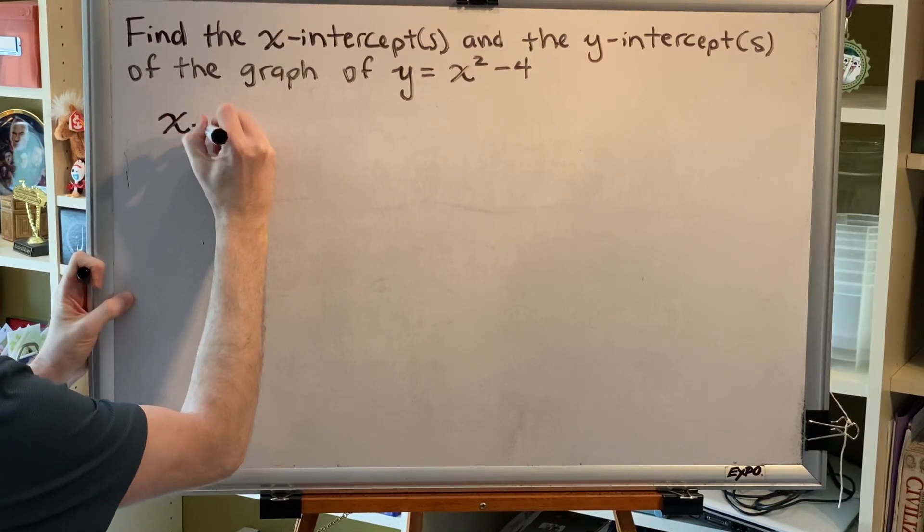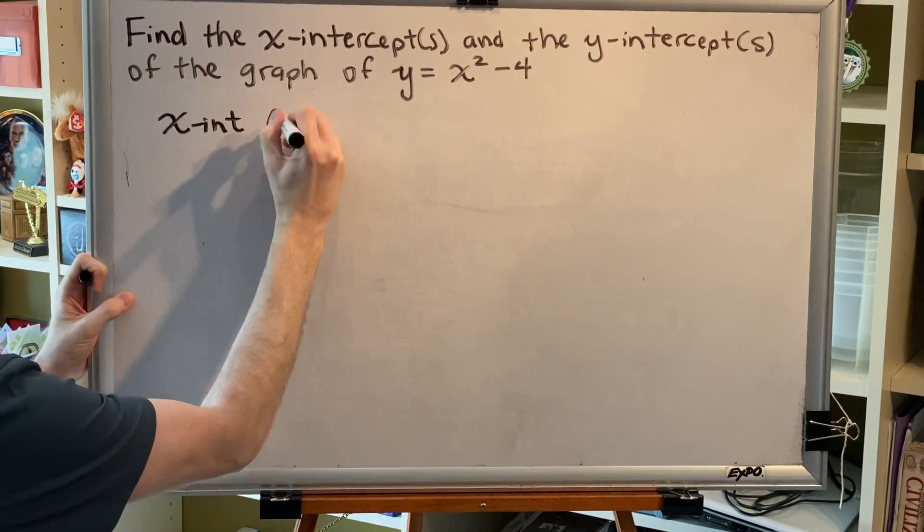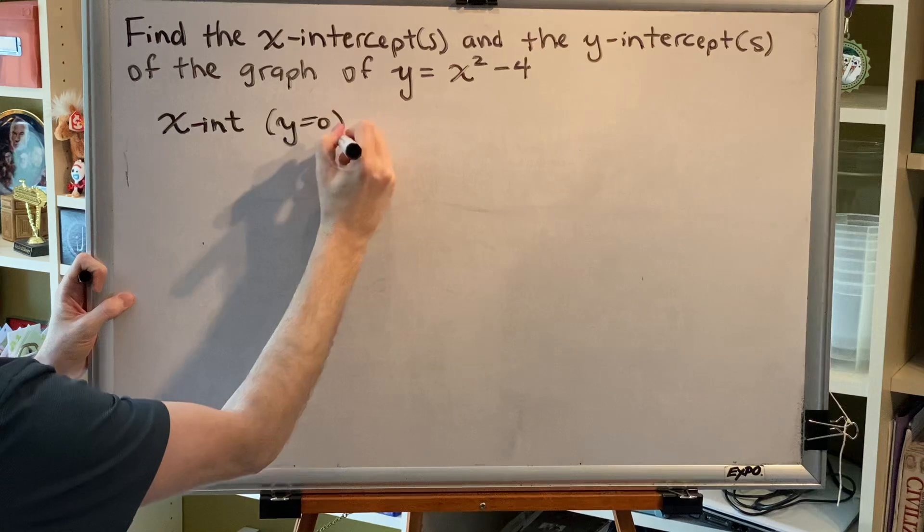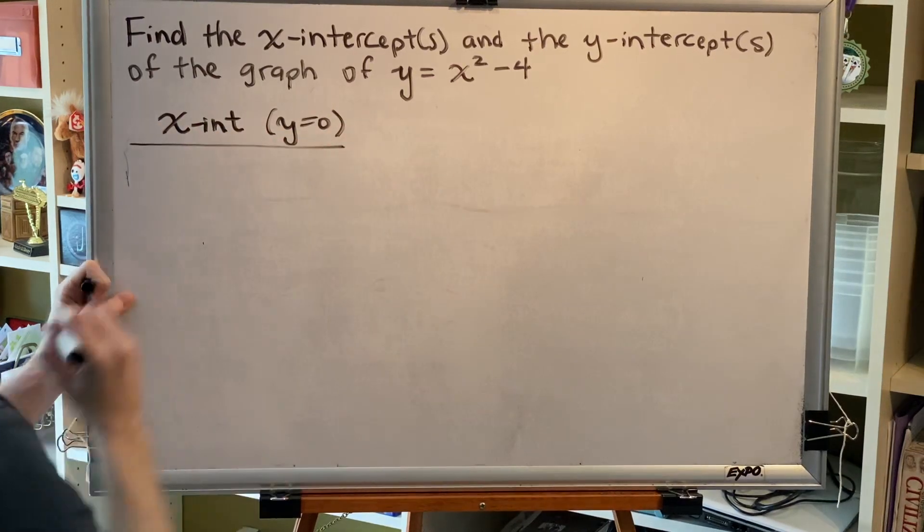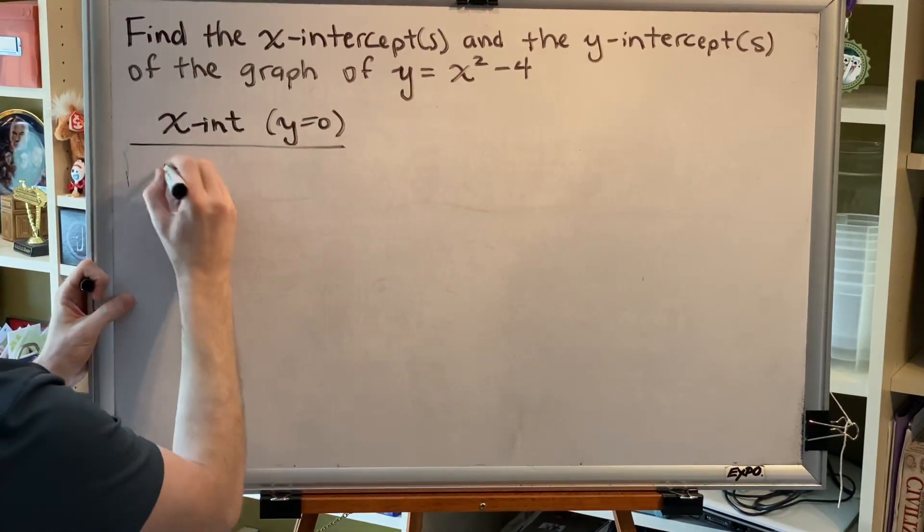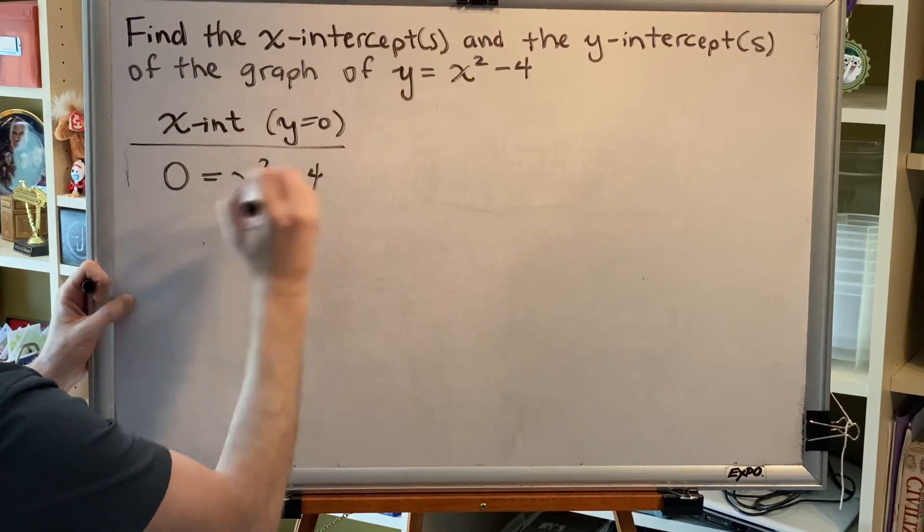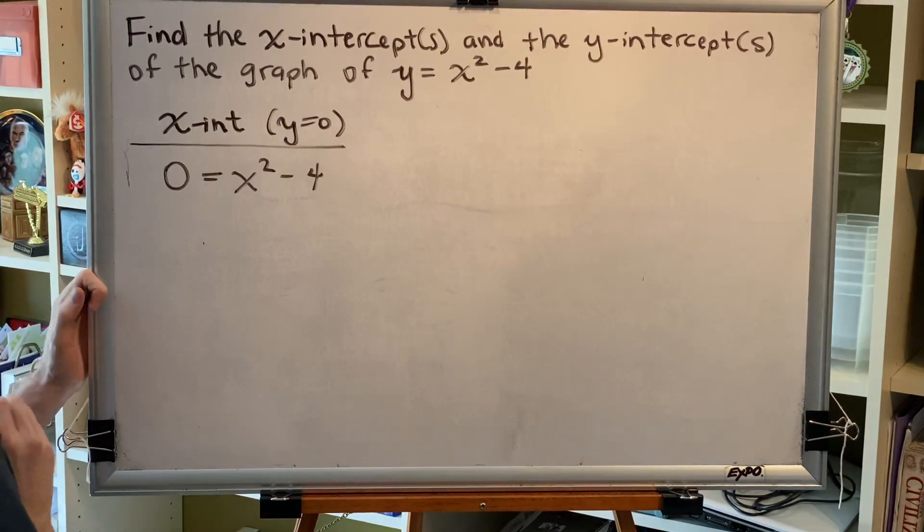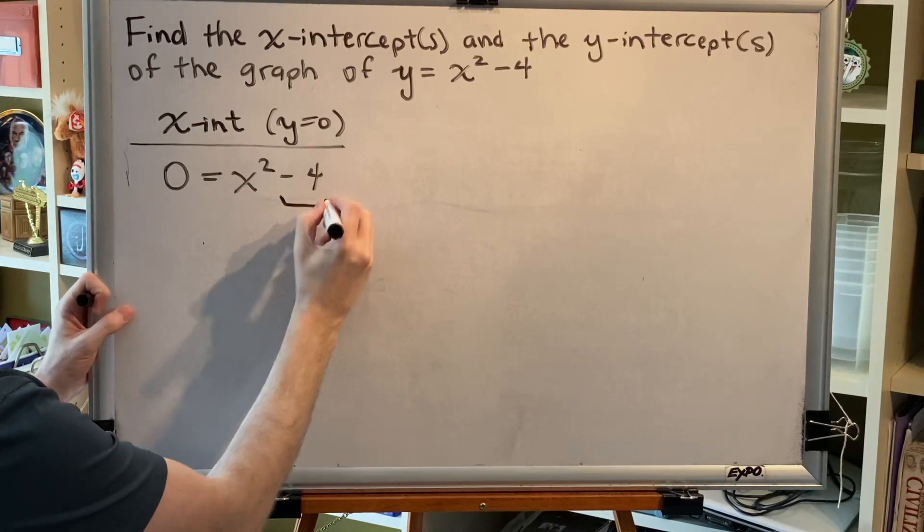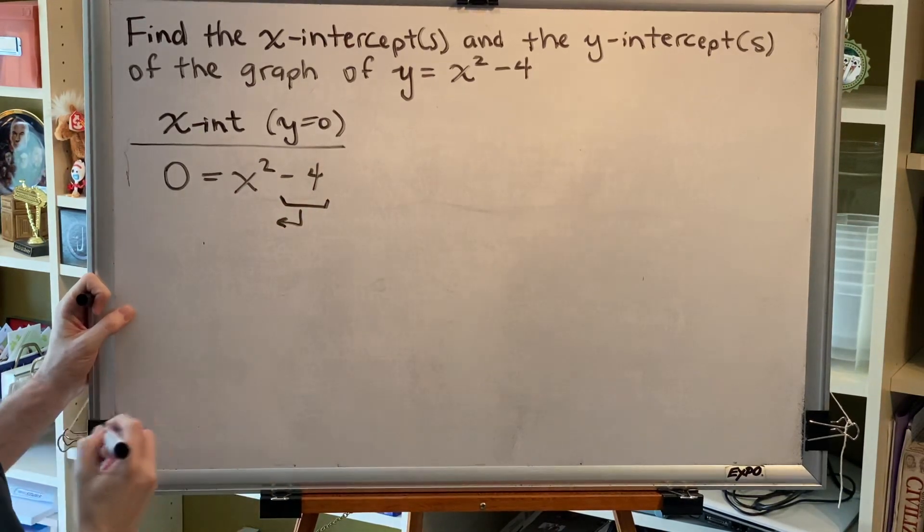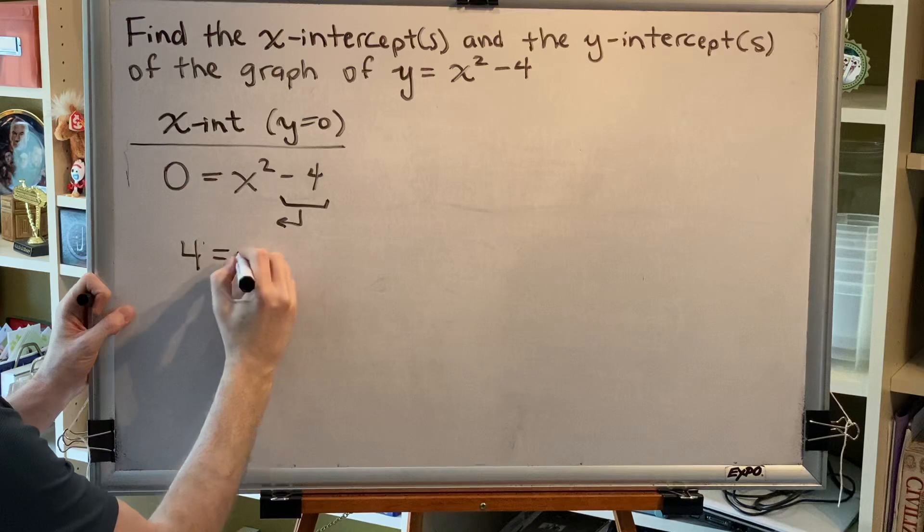Let's look for x-intercepts first. The most important characteristic about an x-intercept is that y equals 0. So replace y with 0 in the equation and then solve for x. I'm going to move this subtract 4 to the other side where it changes signs. Then I have 4 equals x squared.